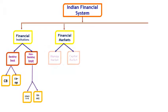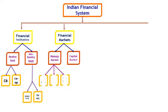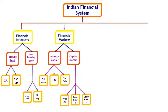The next component is financial markets, which are segregated into money market and capital market. Under the money market we have three sub-components: call money market, treasury bills, and commercial bills. Under the capital market we have three categories: primary market, secondary market, and derivatives market.